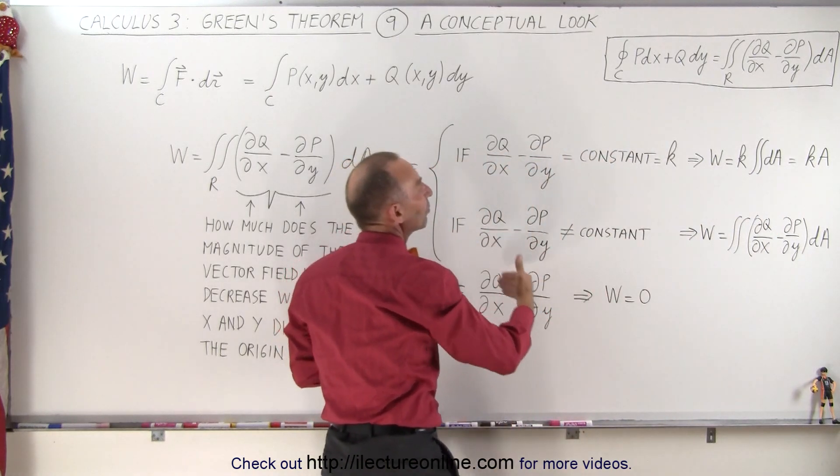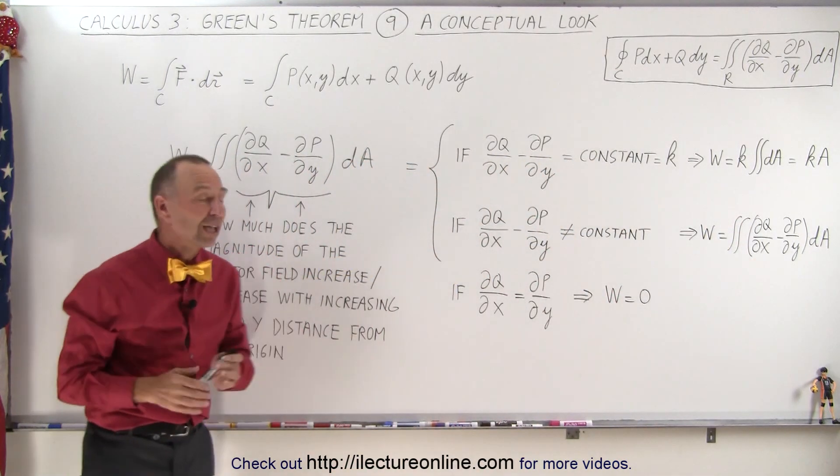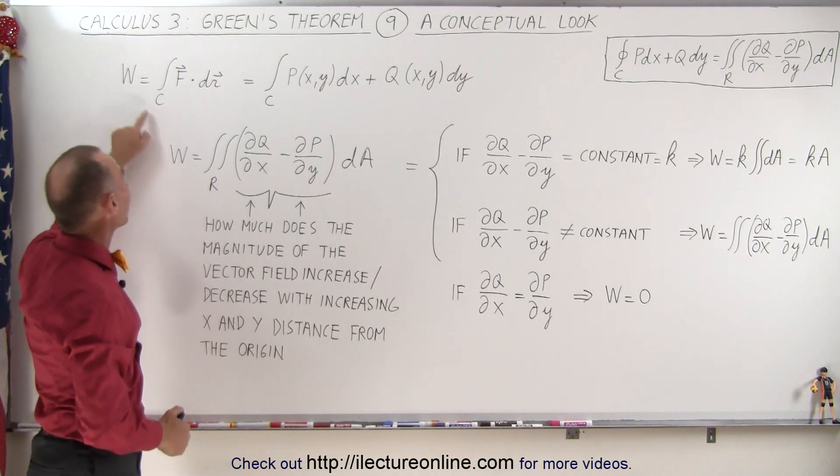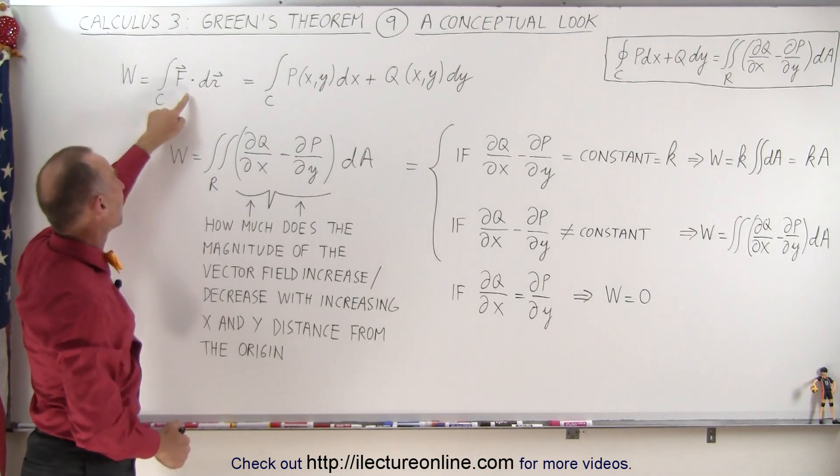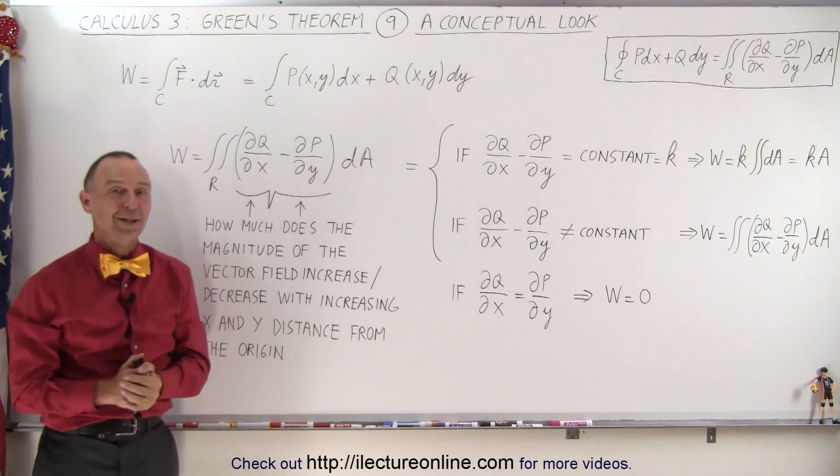Then it's simply equal to the constant times the area enclosed by the path of integration. And if they're not equal, then of course you truly use Green's theorem and integrate this portion on the right side, which in most cases is still going to be easier than doing the line integral itself. And that's how it's done.